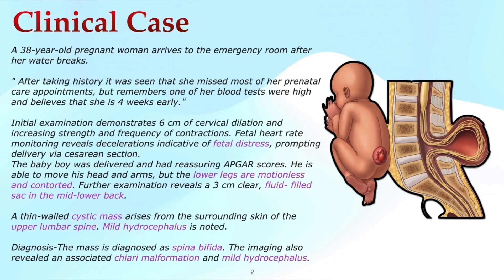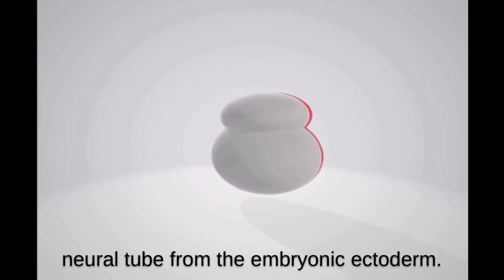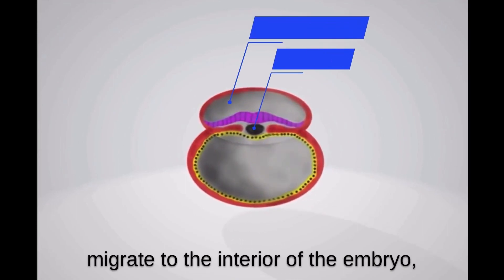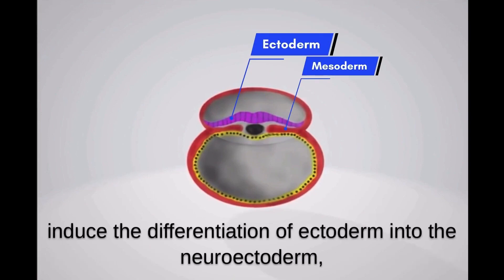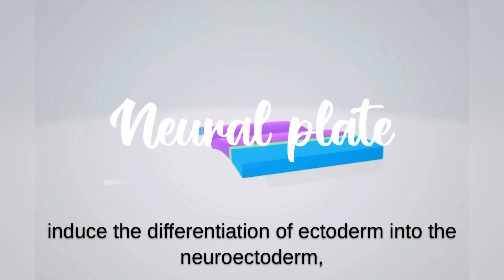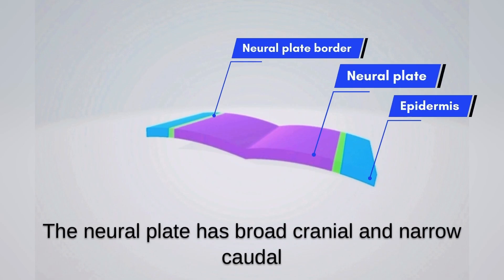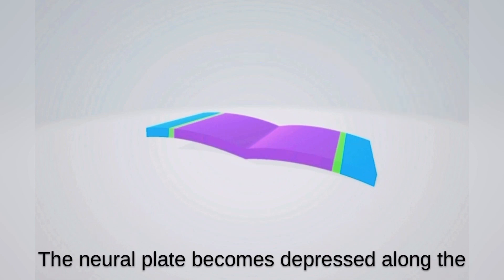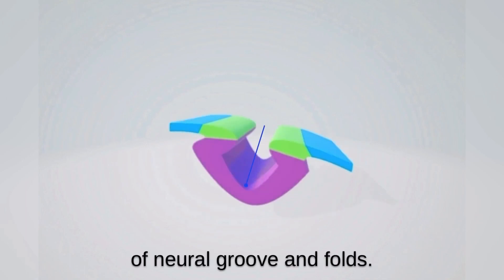Before we go into detail about spina bifida, let's take a look at how the regular development of the CNS takes place. Neurulation is the formation of the neural tube from the embryonic ectoderm. It follows gastrulation, in which cells migrate to the interior of the embryo, forming the three germ layers. During the third week of gestation, the notochord induces the differentiation of ectoderm into the neuroectoderm, which then thickens to form the neural plate. The neural plate has broad cranial and narrow caudal ends that form the brain and spinal cord, respectively. The neural plate becomes depressed along the midline with raised edges on either side, resulting in the formation of the neural groove and folds.